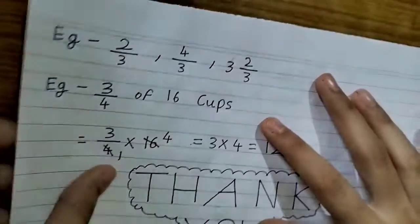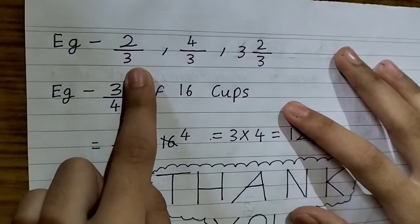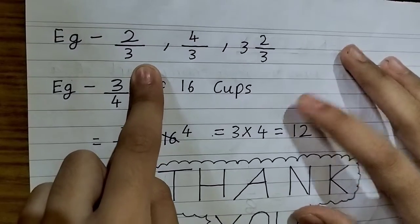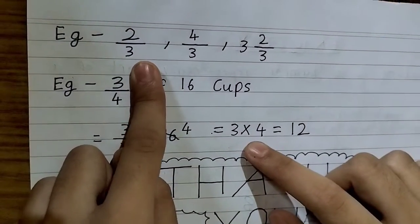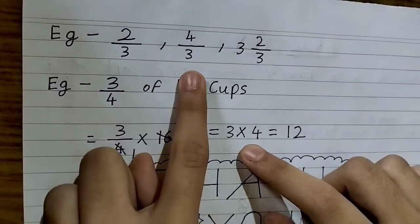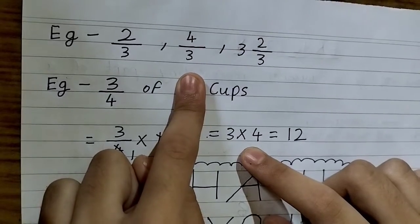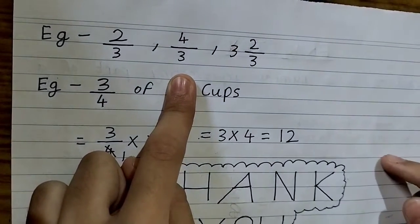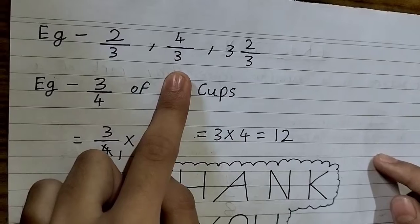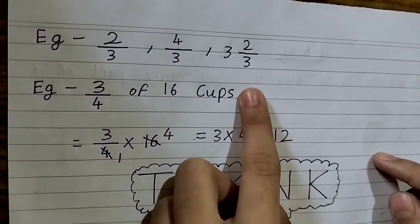Now let's see some examples of it. This is the proper fraction as the numerator is smaller than the denominator. This is the improper fraction as the numerator is bigger than the denominator, and this is the mixed fraction.